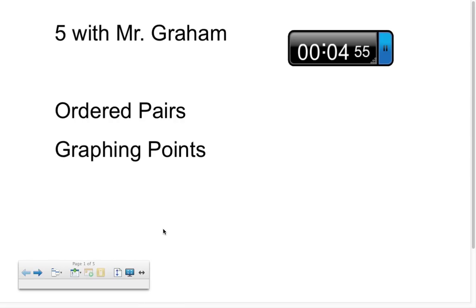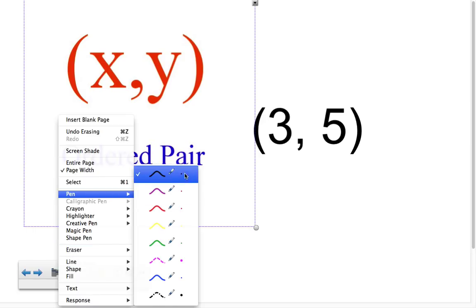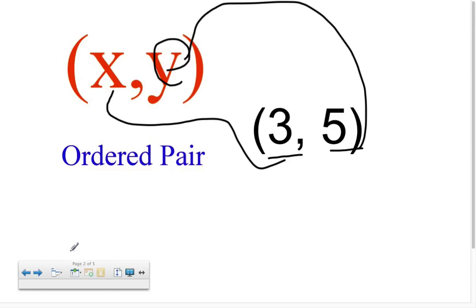Now the first thing you have to know about ordered pairs and graphing points is what is an ordered pair. An ordered pair is organized in the x, y format. The first number is always for the x-axis and the second number is always for the y-axis. As you can see over here to the right we have a (3, 5). Three is for the x, and five is for the y. (3, 5) is our ordered pair here.